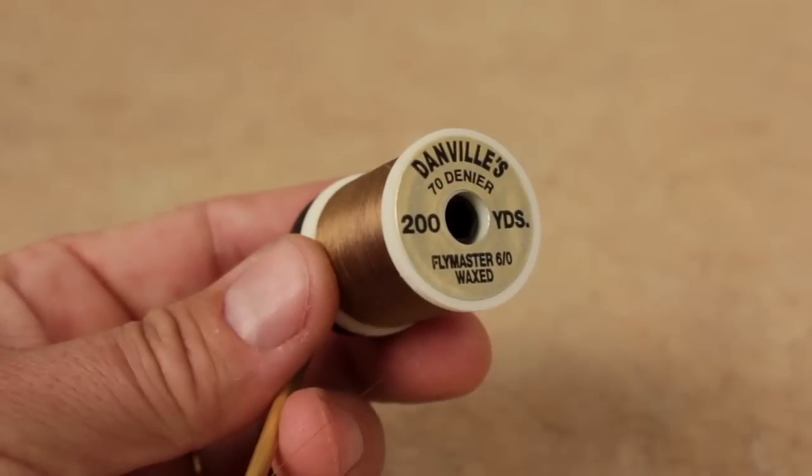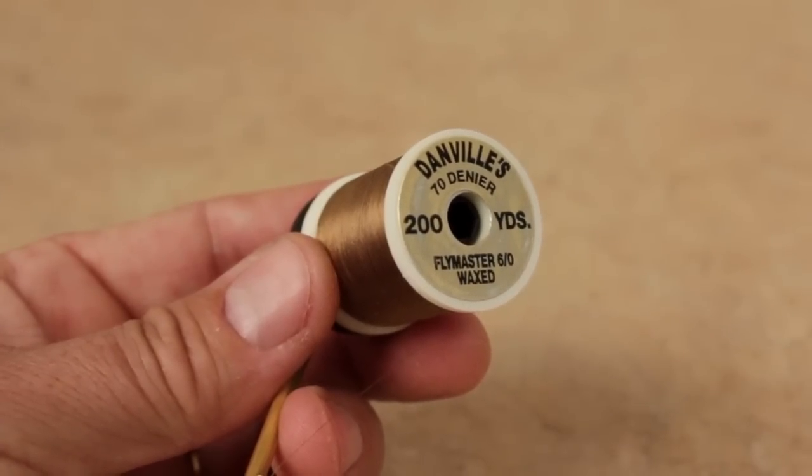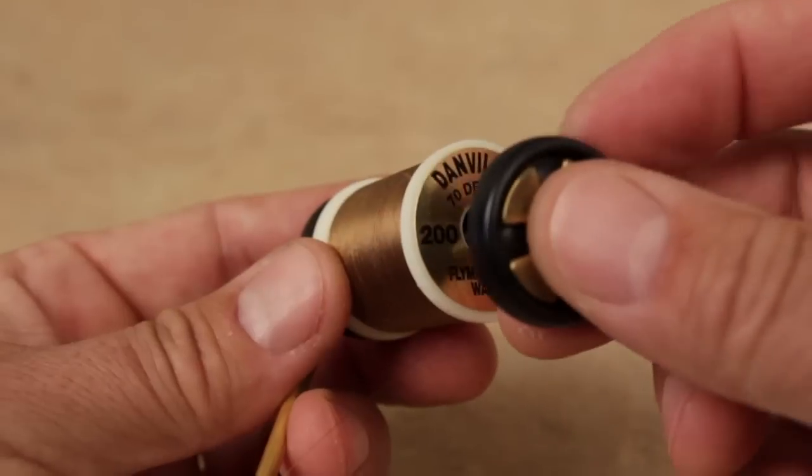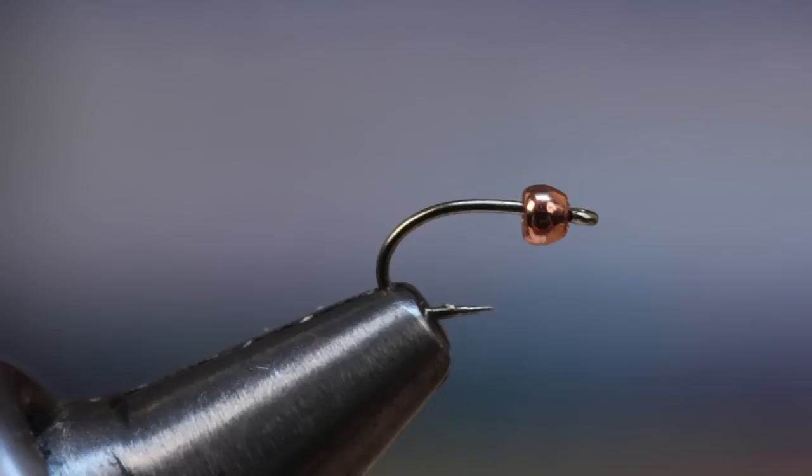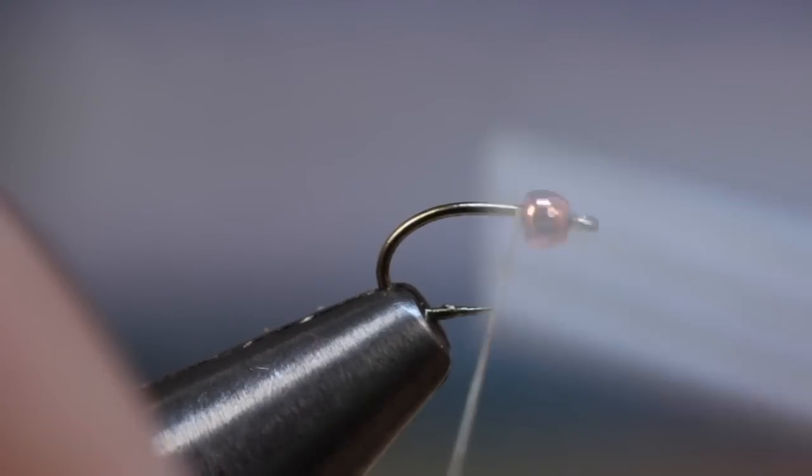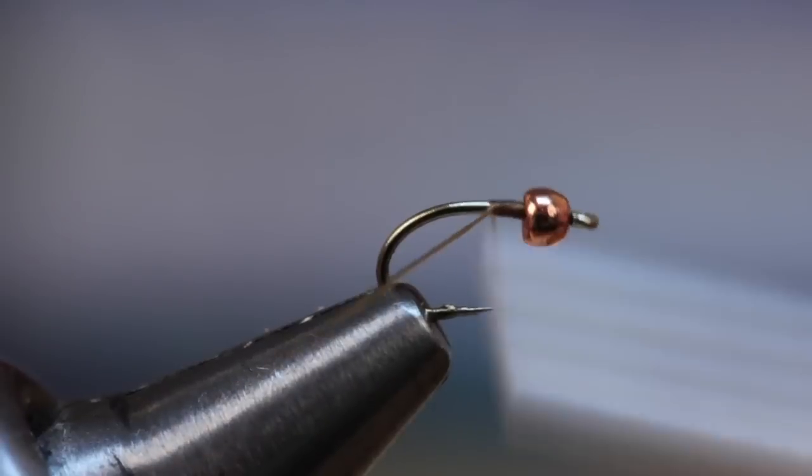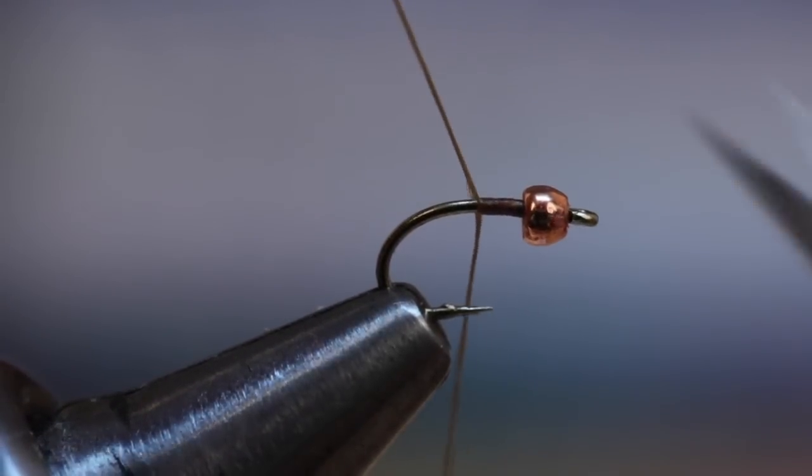On small flies like this one, I like Danville's 6.0 Flymaster waxed thread. Here I'm using a light brown color. Get the thread started on the hook shank behind the bead and take wraps rearward before breaking or snipping the tag end off close.